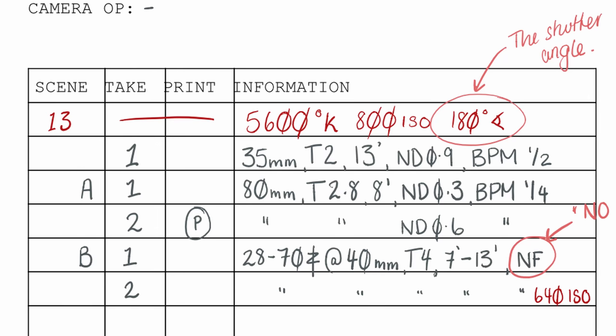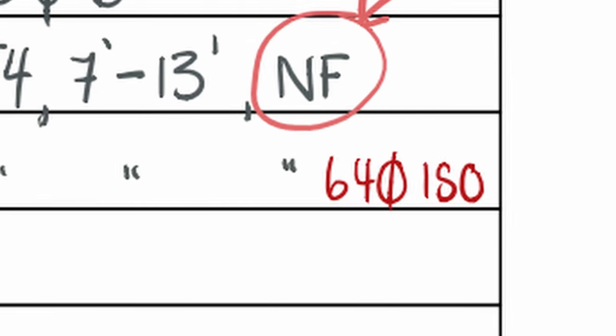If anything does change from the scene settings written at the top, you can add that further down in whichever shot it changed in, and make it really clear by writing it in red like you did with the scene information so people can understand. If you're working on a long-form film — a feature or TV drama — you may be given a camera report booklet which has carbon transfers in there. Those carbon transfers go off to different places, so check with somebody on the team, especially if it's your first time.